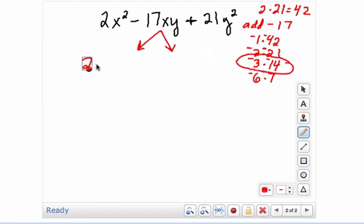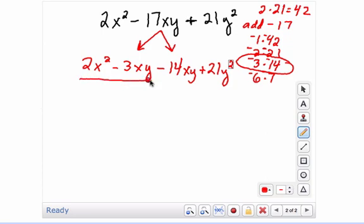I'm going to rewrite this as 2x squared minus 3xy minus 14xy plus 21y squared. Now remember, you're going to group. You're going to common factor.